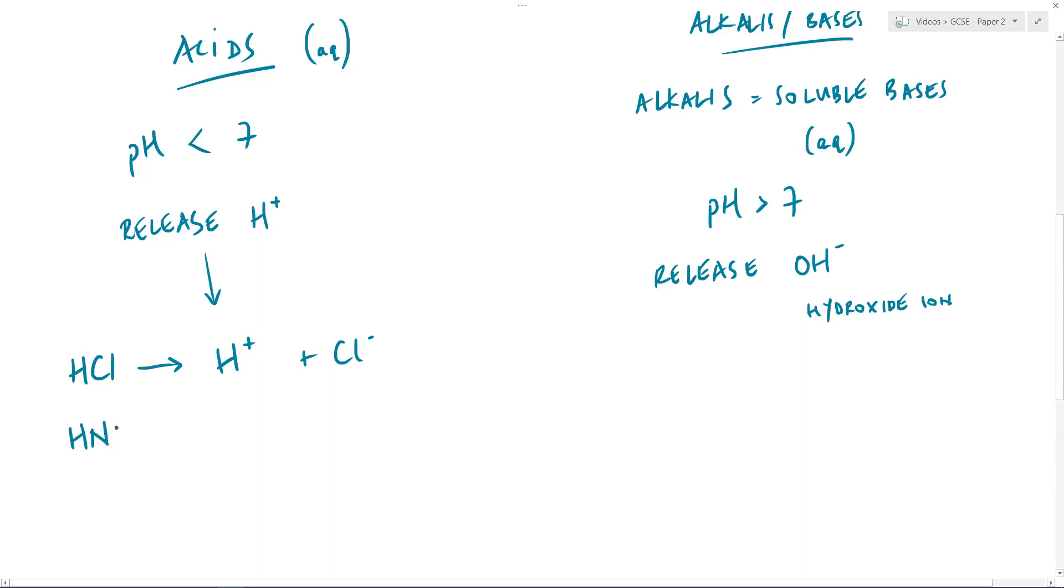Another acid, nitric acid, same thing happens. We get H+ ions and in this case we get the nitrate ion produced as well. Another acid, sulfuric acid, all of these commonly used in schools. Here we would use 2H+ just to balance this up because it is H2SO4 and we would also produce the sulfate ion.